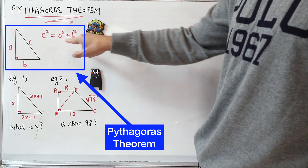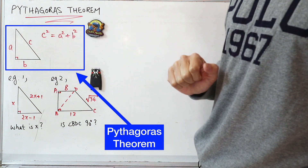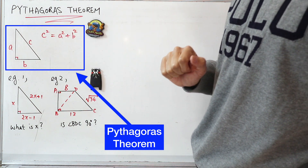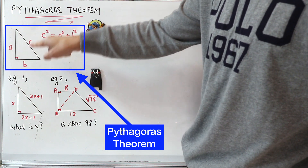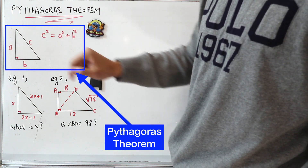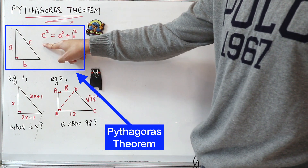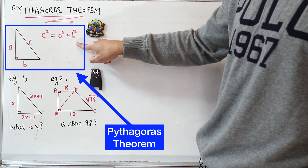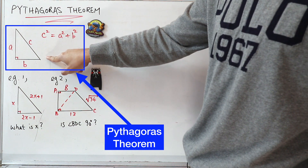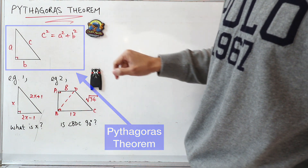c, a, and b are shown in this figure. Note that this is extremely important: this triangle is a right-angled triangle. So in other words, for the Pythagoras Theorem to be applicable, the triangle must be a right-angled triangle.